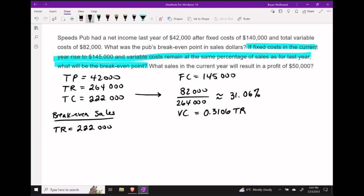So let's assume that our variable costs this year are going to be in the same proportion as they were last year. In other words, that means our variable costs should be 31.06% of our total revenue that we're going to bring in this year.